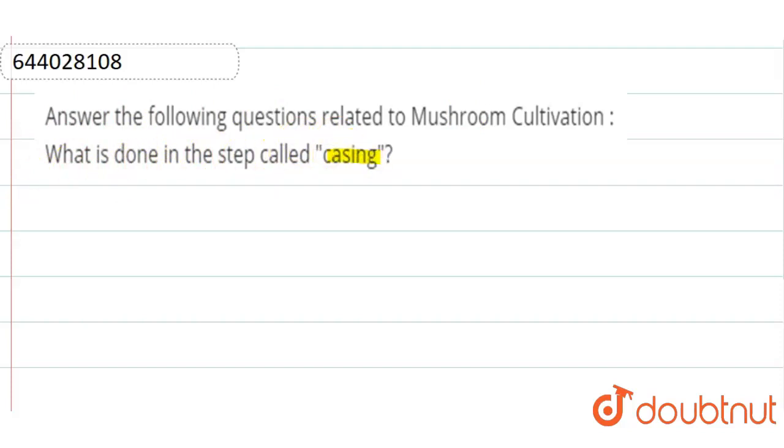Now come to the answer. Casing is the step of mushroom cultivation, and it is a process of covering of soil.